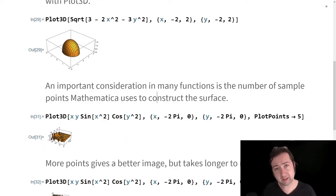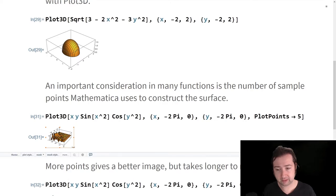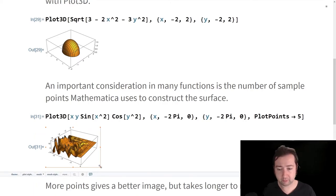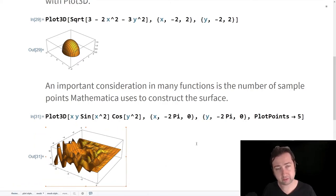I will say that in many cases in Mathematica, it turns out to be very important, the number of sample points that you use to construct a graph. This is much more important in three dimensions than in two. And that's because of the way Mathematica is constructing these images. It samples a certain number of points per unit interval. And then it interpolates the surface from those.